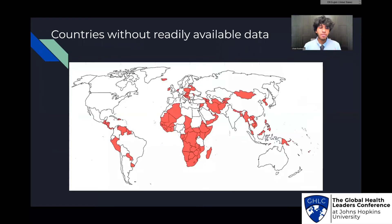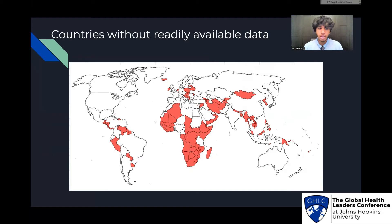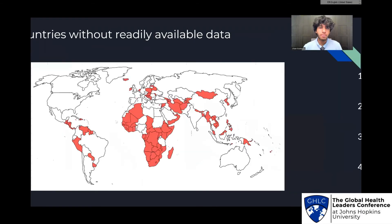Here's a map of countries I could not find data about readily. This could be because there simply were no studies taken, or there's a poor healthcare system, or poor interest in finding data for these countries. That's a major problem because, as you can see, many countries in Africa, Asia, and Latin America — which face healthcare issues — do not have rates. So if we want to tackle this global trend, we need to examine the rates in more different countries.